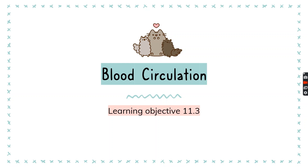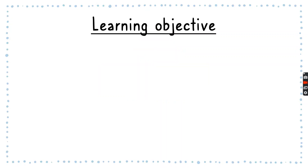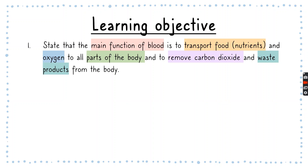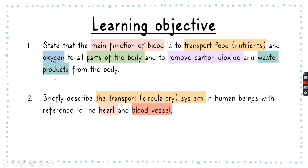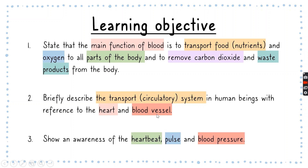Now let's talk about blood circulation. Today's learning objectives are to state the main function of the blood, which is to transport nutrients and oxygen to all parts of the body and to remove carbon dioxide as a waste product. We will also look in more detail at how the transport system involves the heart and blood vessels, and lastly we will briefly talk about heartbeat, pulse, and blood pressure.